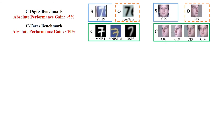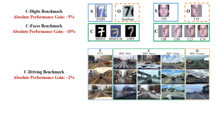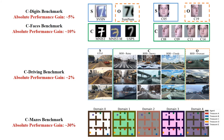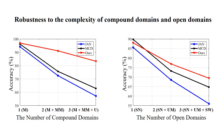We construct four benchmarks on classification, segmentation, and reinforcement learning, and we achieve improvements on all of them. We also test our method by number of compound domains and number of open domains. Our method is more consistent compared to others.